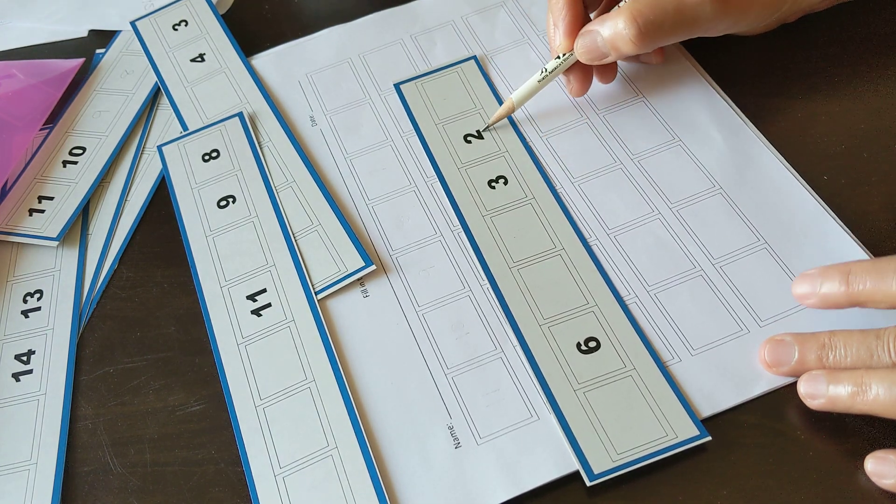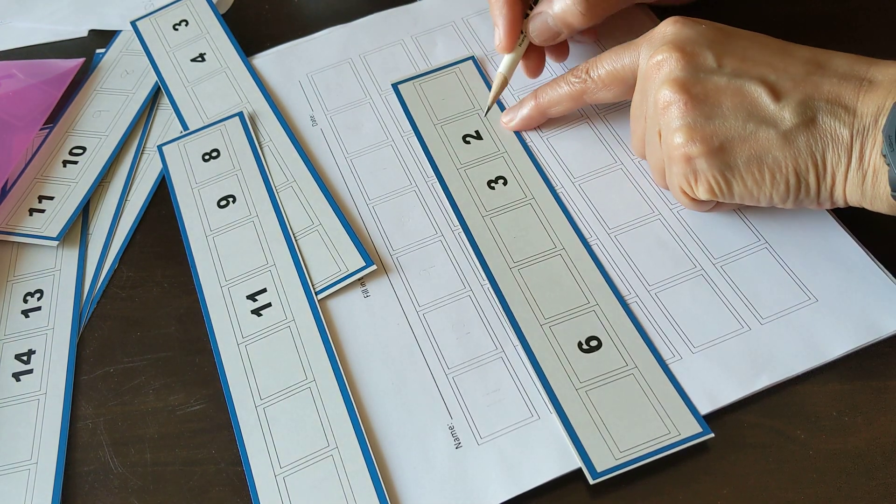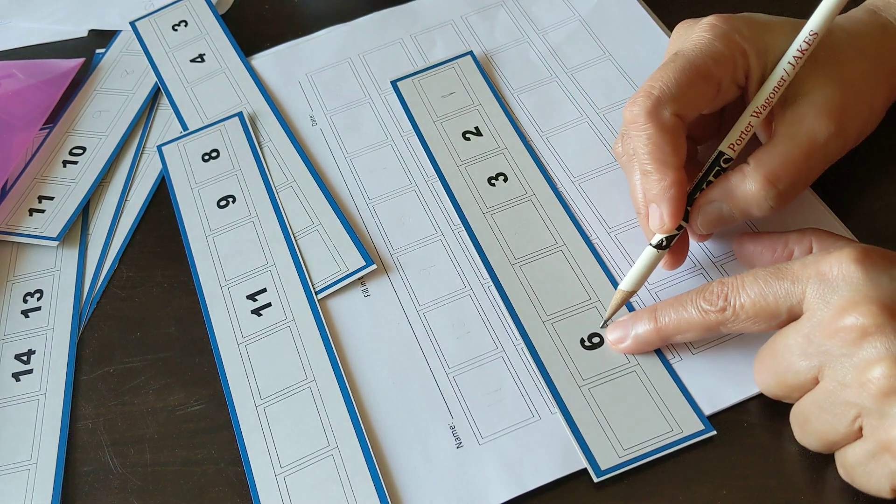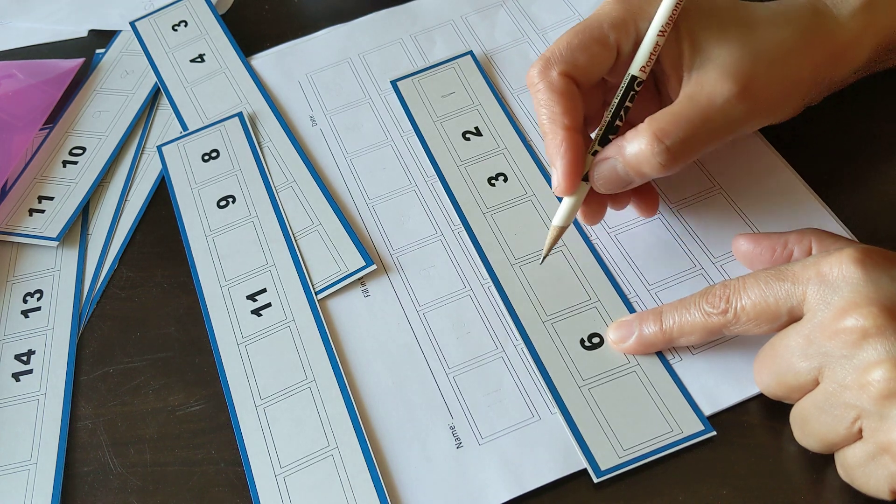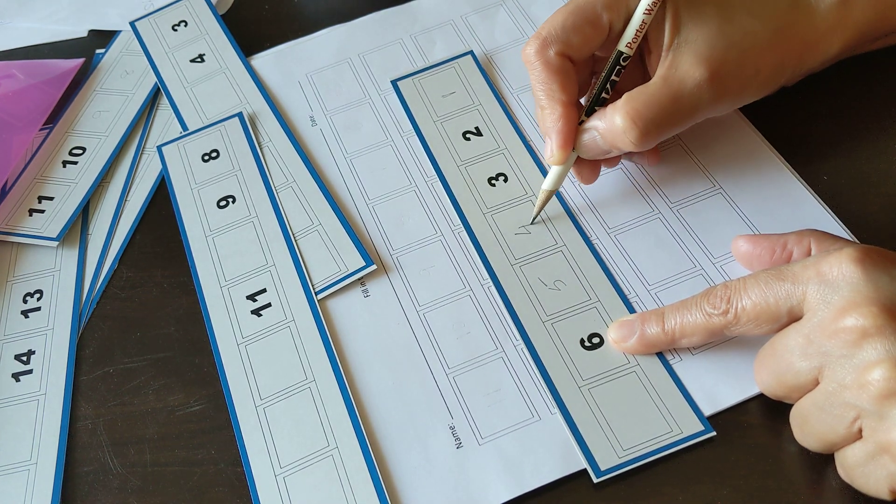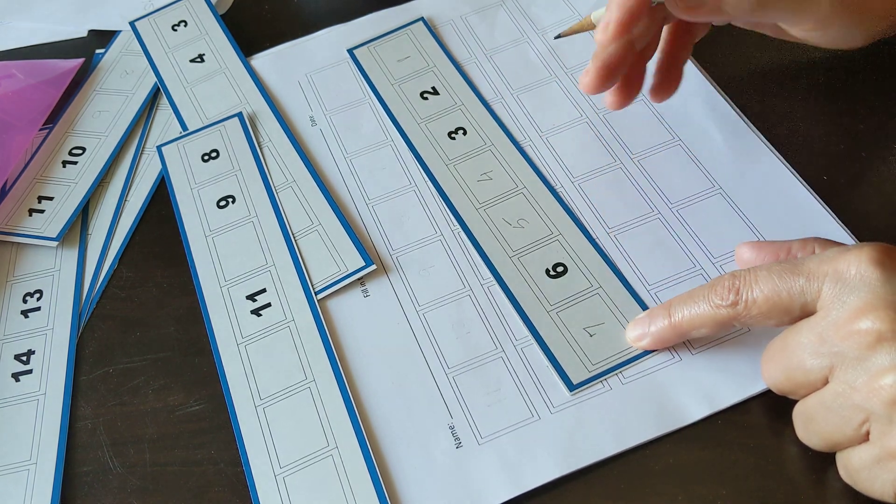Three, two, the number that comes before two is one, six, the number that comes before six is five, and then four, and here seven.